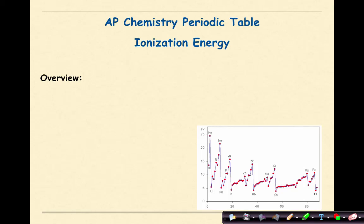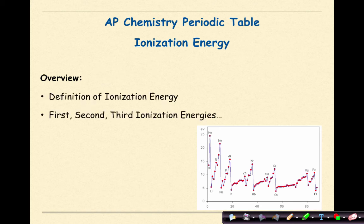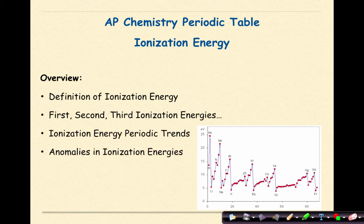AP Chemistry Periodic Table, Ionization Energy. Specifically, what we're going to be looking at today is definition of ionization energy, first, second, third ionization energies, ionization energy periodic trends, and anomalies in ionization energies.